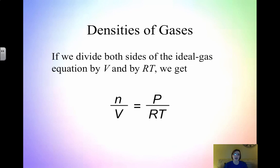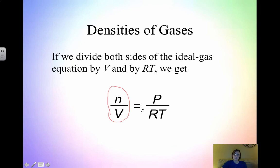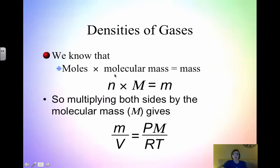To find the density of a gas, recall that density is mass over volume. If we rearrange the ideal gas law, we get N/V = P/RT, which gives us moles per liter. Since we need grams per liter — because the density of a gas is always given in grams per liter — we need to convert moles to grams using the molar mass. We know that N × M (molar mass) = lowercase m (mass of the substance).